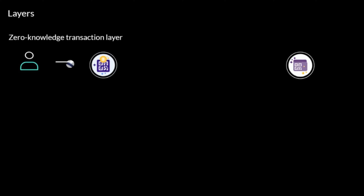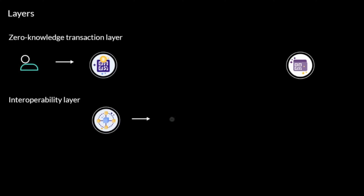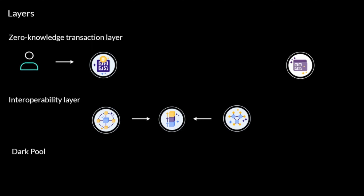The first layer is the zero-knowledge transaction layer. This layer provides the user a place for storing and transferring REN tokens, without revealing the amount of the transaction or how much the user has in their cryptocurrency wallet. The second layer, the interoperability layer, handles all of the trustless swaps on the blockchains. The last layer, the dark pool, has secret order matching engines that process orders only the owners know of.